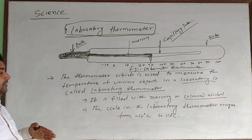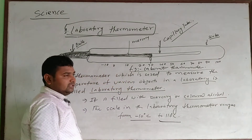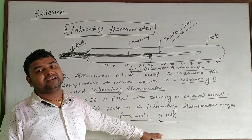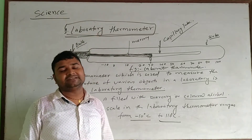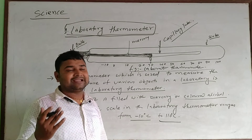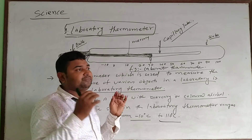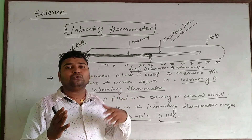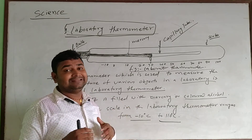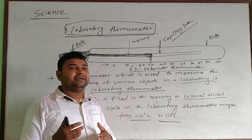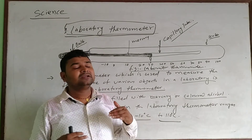The temperature range of the laboratory thermometer is from minus 10 degree Celsius to 110 degree Celsius. This laboratory thermometer is used in the science lab. For example, suppose we have to measure and differentiate between alcohol and another substance — at that time this laboratory thermometer is used. There are various experiments where this laboratory thermometer is used.